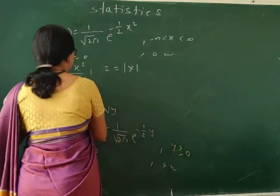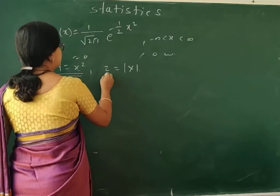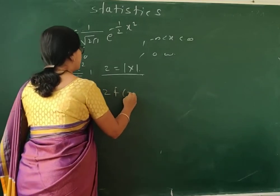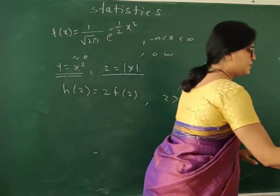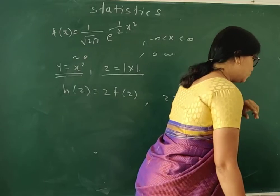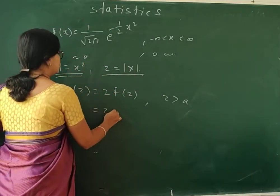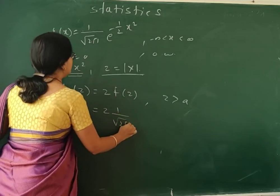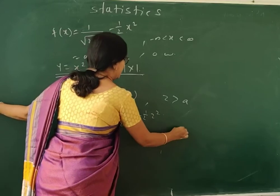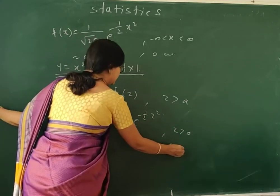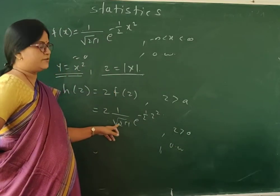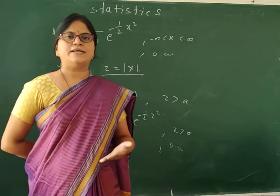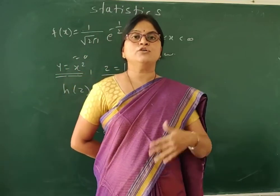Similarly, for Z = |X|, the PDF is f_Z(z) = 2·f(z). Substituting from the normal distribution, f_Z(z) = 2 · (1/√(2π)) · e^(−z²/2). Simplifying, the factor of 2 and √(2π) combine, giving f_Z(z) = (√2/√π) · e^(−z²/2), for z > 0. This completes the second example for finding the distribution using the distribution function method.